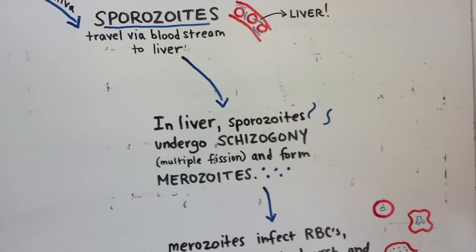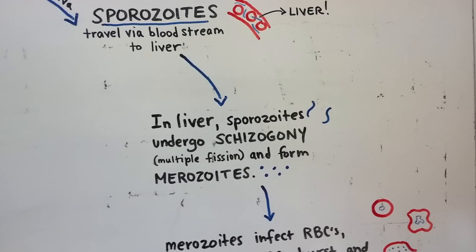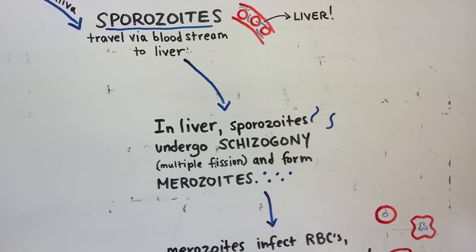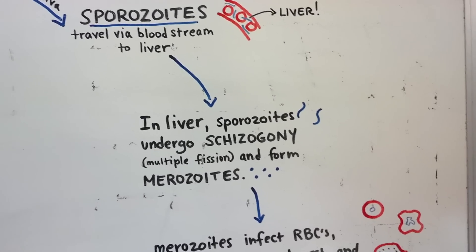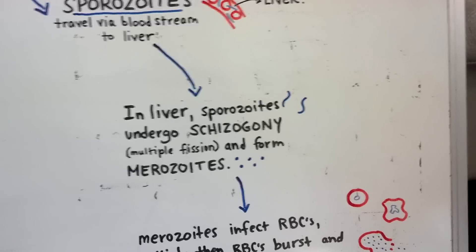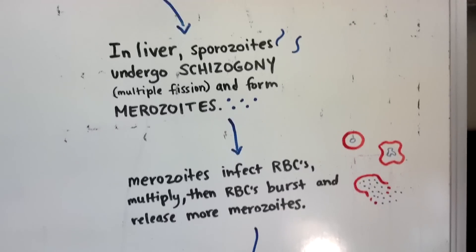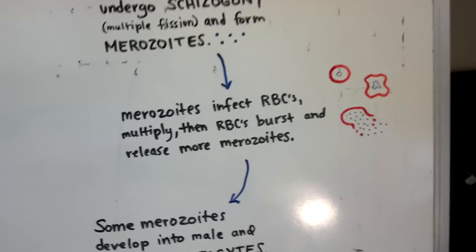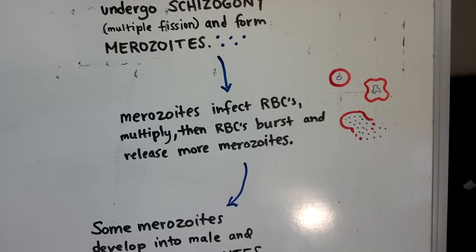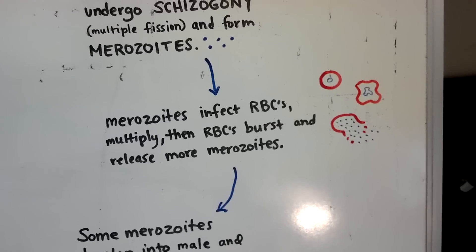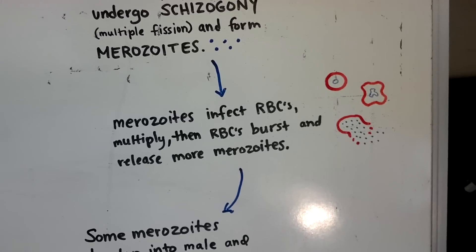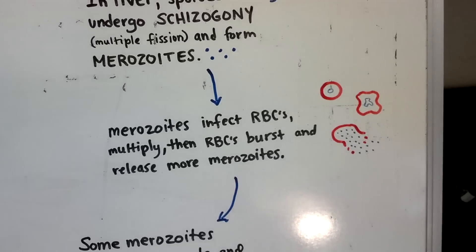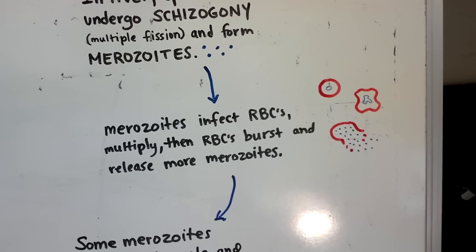In the liver, the sporozoites undergo schizogony, which is multiple fissions, and they form merozoites. It can form thousands of these merozoites. From there, the merozoites go back into the bloodstream, they infect the red blood cells, they multiply, and then the red blood cells can't take it anymore and they burst, releasing more merozoites out into the bloodstream.